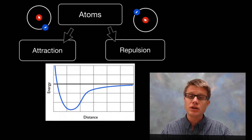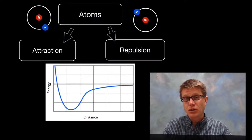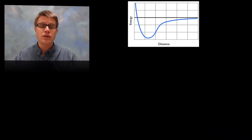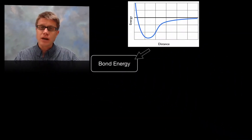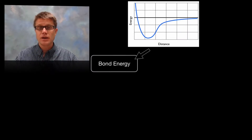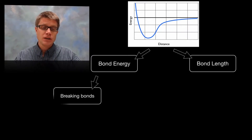We can measure these forces using an energy-distance graph, where we've got the energy that's pulling or pushing those atoms apart, and then how far they are physically separated. Using a graph like that, we're able to determine the bond energy — the energy holding them together — and also measure the bond length, which is how far those atoms are going to be apart.